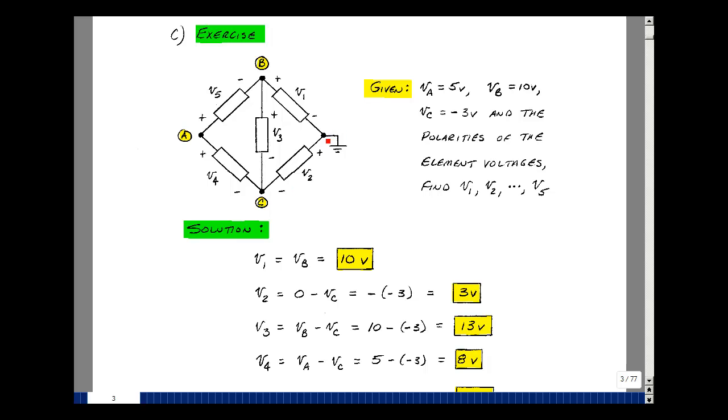Element two is right here, it would be this node voltage which is zero, minus v sub c, which is equal to minus 3, and so I get a plus 3.